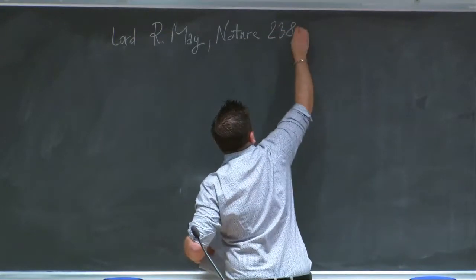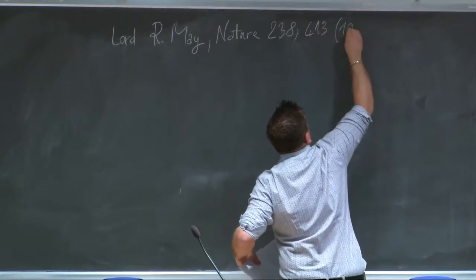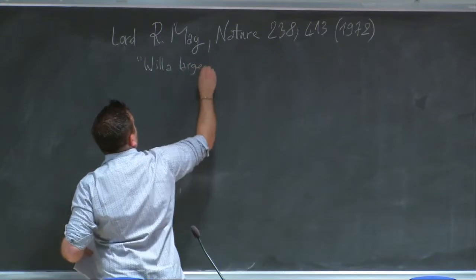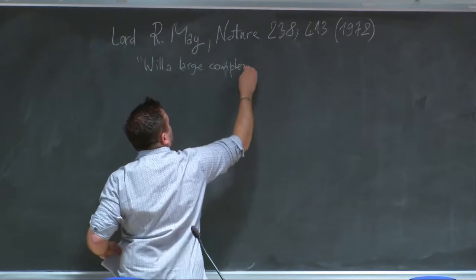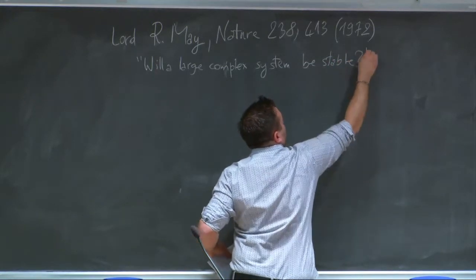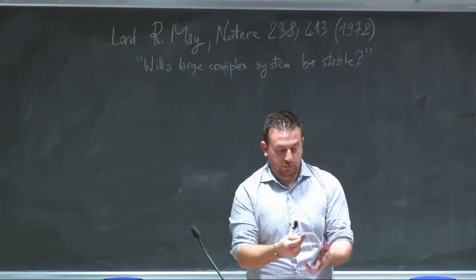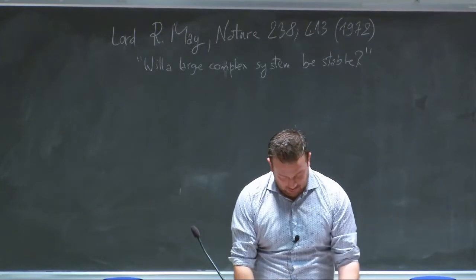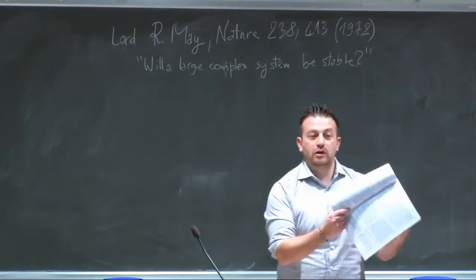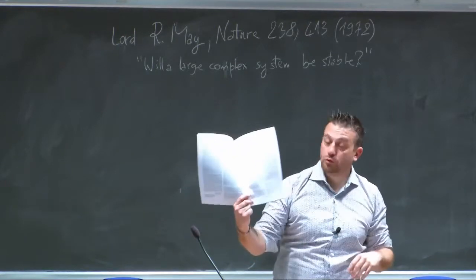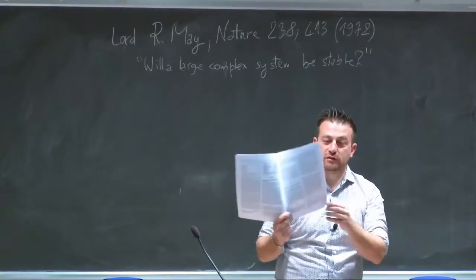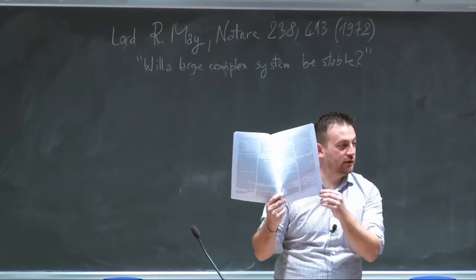I will describe briefly the first paper connecting theoretical ecology with properties of random matrices. This is a very famous paper by Robert May, published in Nature 238, p.413, in 1972. The paper is called 'Will a Large Complex System be Stable?' It should be reproduced in the handout — it is a two-page paper with thousands of citations and is a very pleasant read.